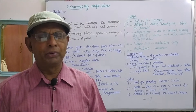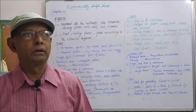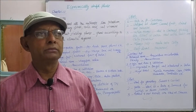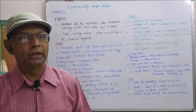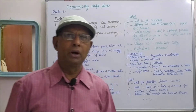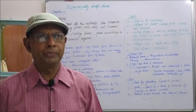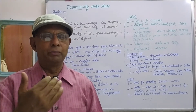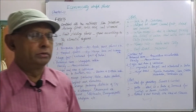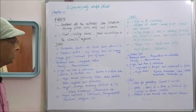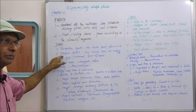The fruit yielding plants grow depending on the climatic region. In the colder region, some of the fruit yielding plants will grow. In the hot climates, some of the fruit yielding plants will grow. So depending upon the climatic region, the fruits are divided into two types: temperate fruits and tropical fruits.